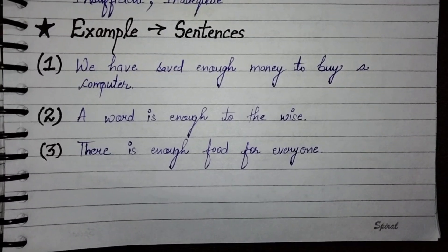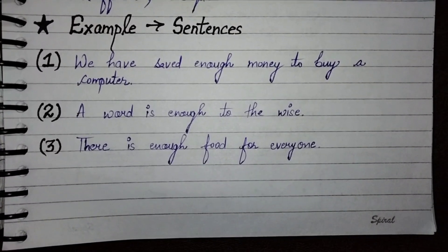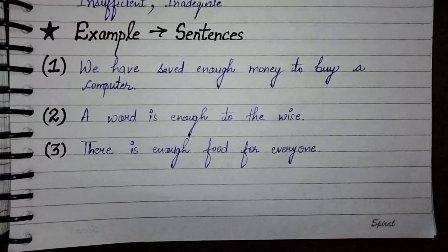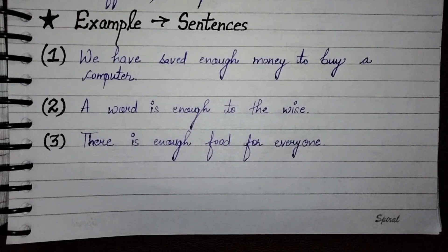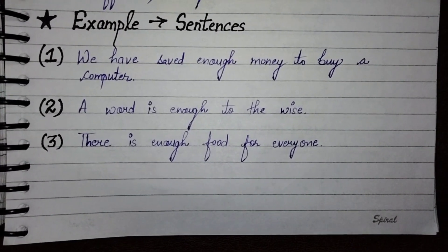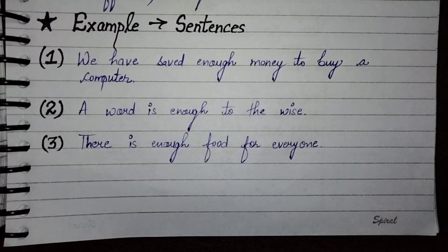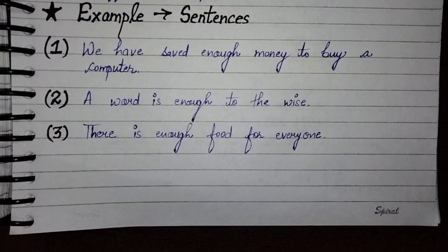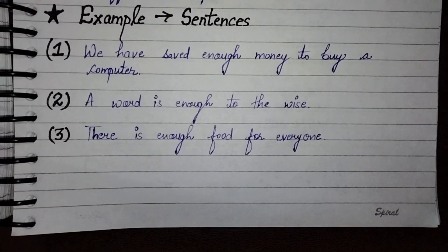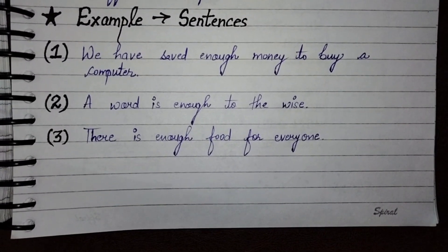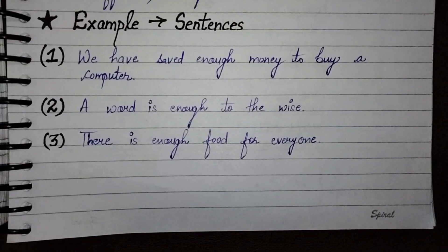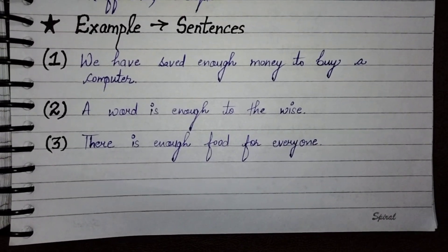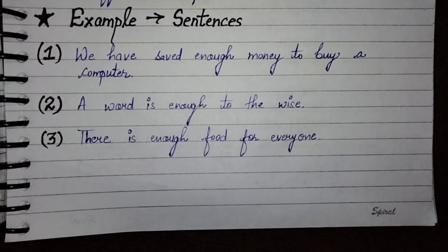Now example sentences. First sentence: we have saved enough money to buy a computer. Second: a word is enough to the wise. And third: there is enough food for everyone.